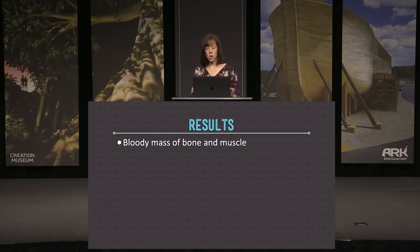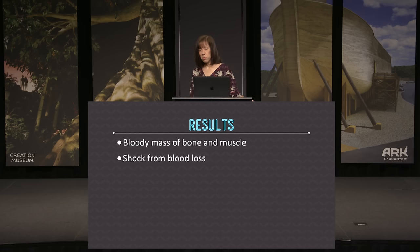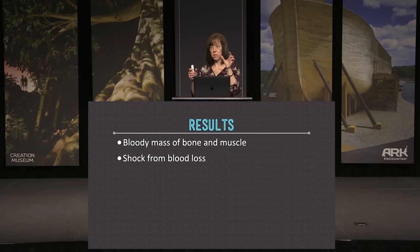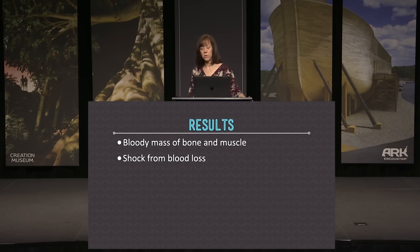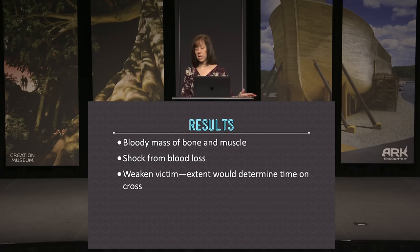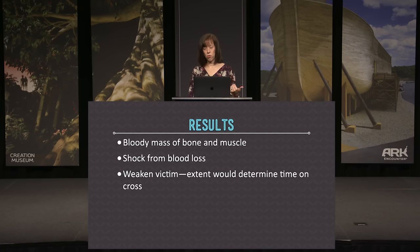The result is a bloody mass of bone and muscle, with flesh ending up in strips or ribbons. The individual, depending on severity, might begin to undergo shock from blood loss. The extent of this scourging would then determine their time on the cross.